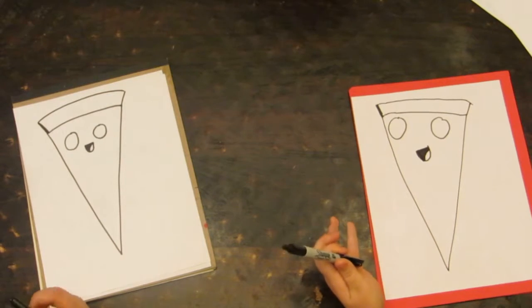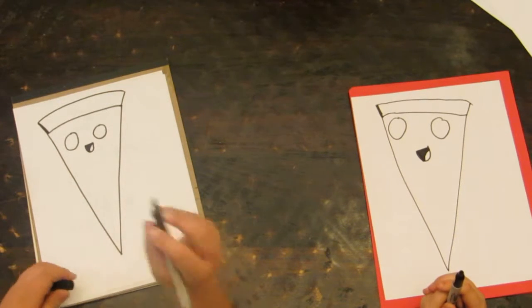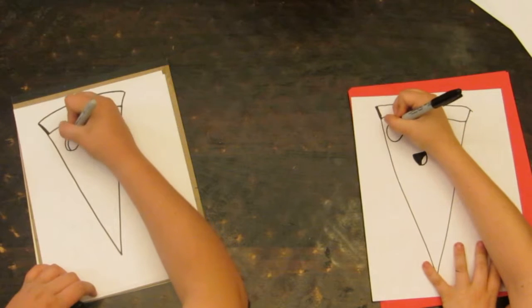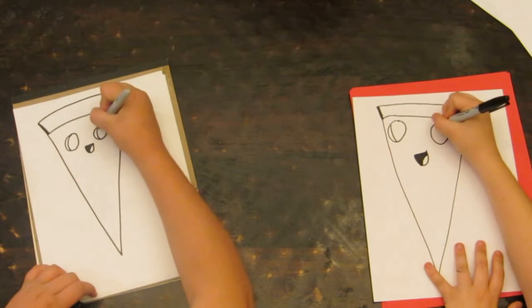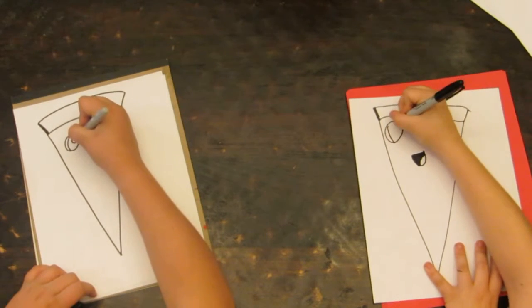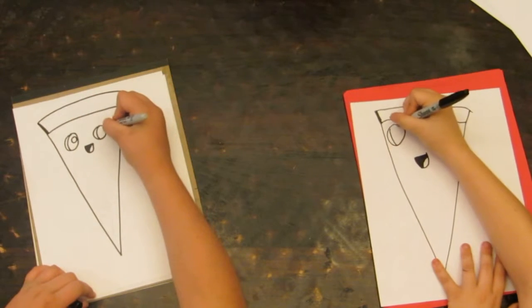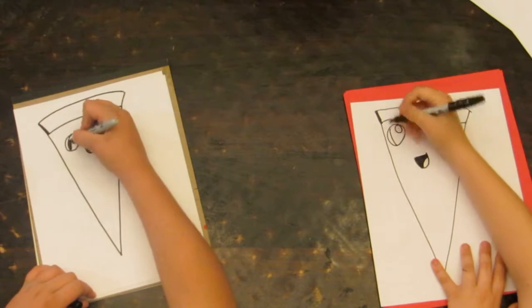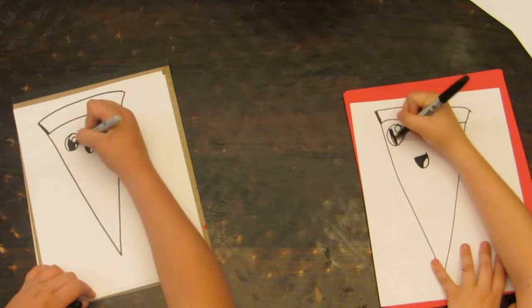So now we're going to draw the eyes. So we're going to do what we usually do. We're going to do a line there. Line there. But this time we're going to do a big circle. And a big circle. And then that's all. And then now we're going to color it in.